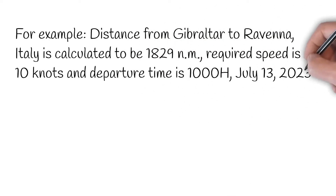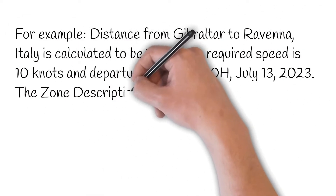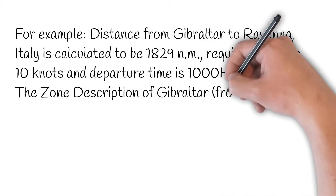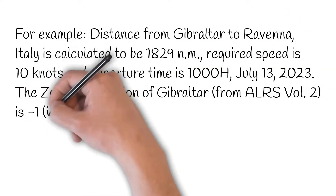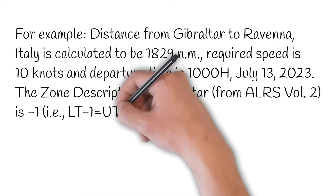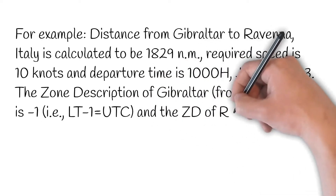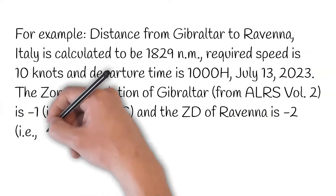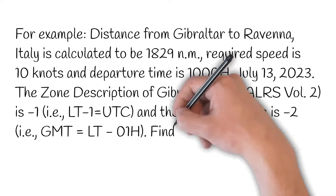The zone description of Gibraltar, from ALRS Volume 2, is minus 1 — that is, local time minus zone description equals UTC. The zone description of Ravenna is minus 2 — that is, GMT equals local time minus zone description. Find the ETA.